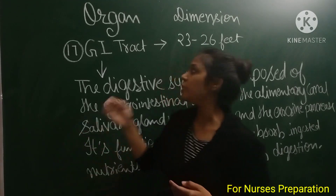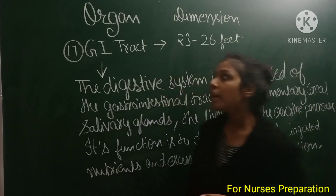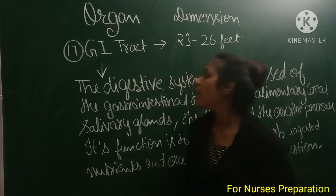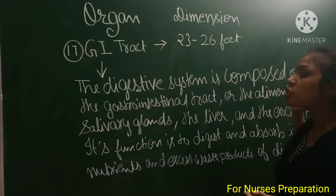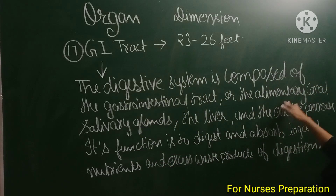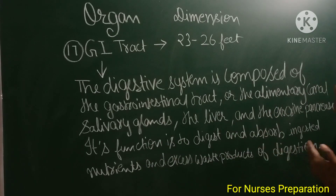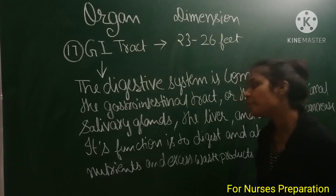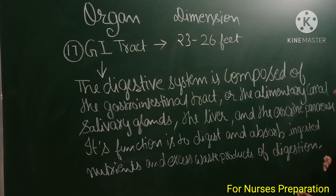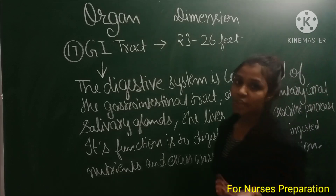Next organ is the GI tract, or gastrointestinal tract. It is 23 to 26 feet in dimension. The digestive system is composed of the gastrointestinal tract (the alimentary canal), salivary glands, the liver, and the exocrine pancreas. Its function is to digest and absorb nutrients and expel excess waste products of digestion.